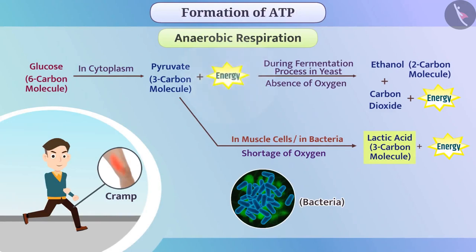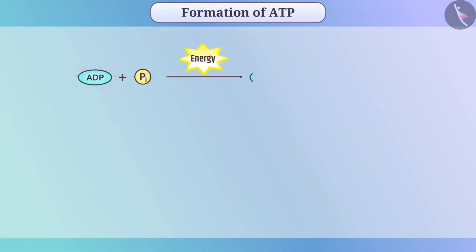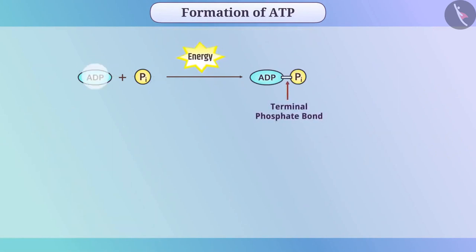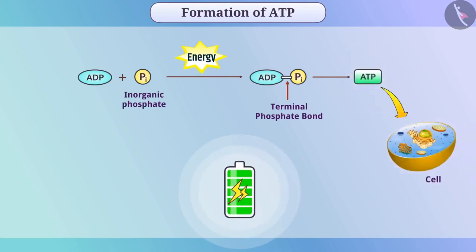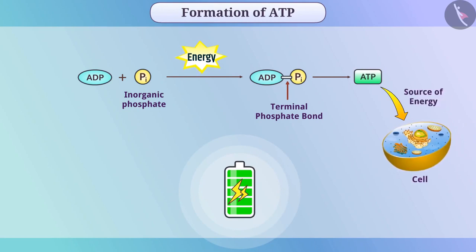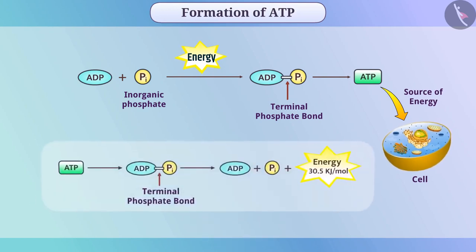The energy produced in the process of respiration is used immediately for the formation of a bond between ADP and inorganic phosphate, which leads to the formation of an ATP molecule. It is like charging a battery. Like a charged battery, ATP produced is used as a source of energy for reactions in the cell. Whenever there is a requirement of energy, it is obtained by breaking the bonds between the phosphate molecules of ATP.